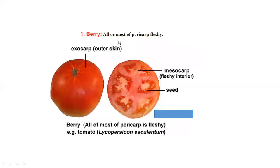This is a berry, where most of the pericarp is fleshy. There's an exocarp, which is the outer layer, a mesocarp in the middle, and an endocarp. The mesocarp is very fleshy, and these are the seeds.